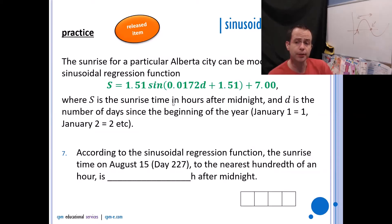The sunrise for a particular Alberta city can be modeled by the sinusoidal regression function s equals 1.51 sin(0.0172d + 1.51) + 7.00, where s is the sunrise time in hours after midnight and d is the number of days since the beginning of the year. So January 1st is 1, January 2nd is 2, February 1st would be 32 because there's 31 days in January and so on. Now before that scares you, this was a released item, but they usually tell you what day you're looking for. They don't make you figure it out, so you don't have to sit there with a calendar to figure out what day August 18th is or August 15th.